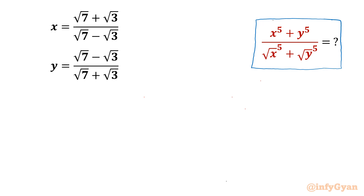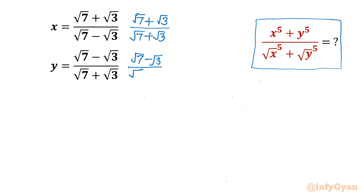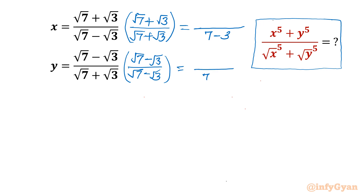I will begin with the rationalization of x and y. I need to multiply numerator and denominator of x with (√7 + √3), and for y I will multiply numerator and denominator by (√7 − √3). The denominator is a difference of two squares: (a+b)(a−b), so √7² is 7 and √3² is 3, giving 7 − 3 = 4.